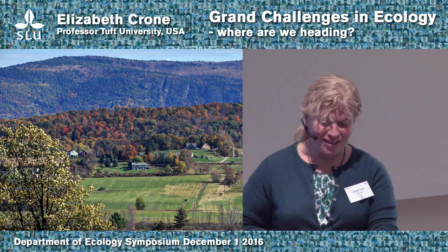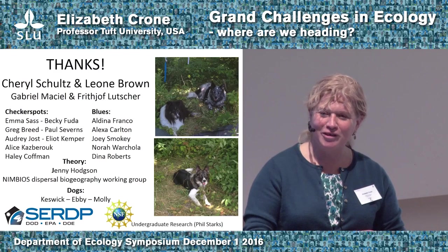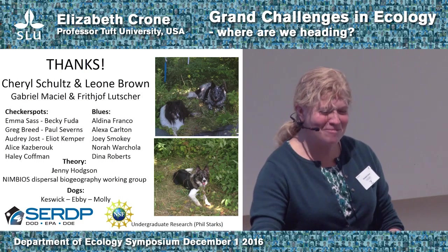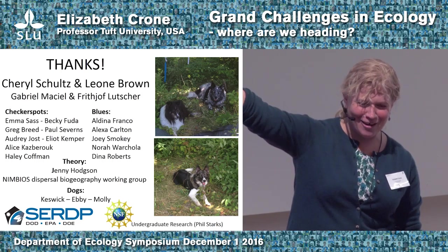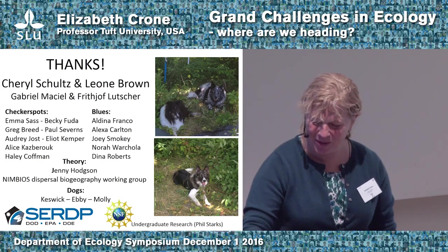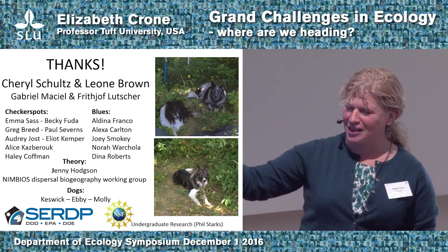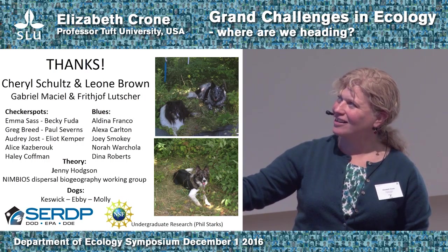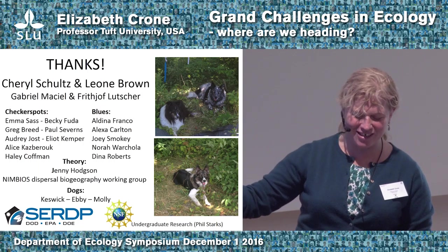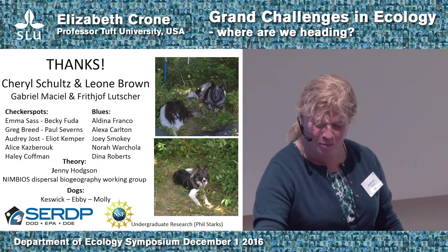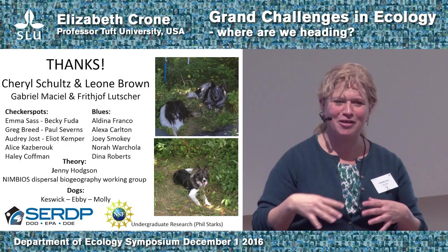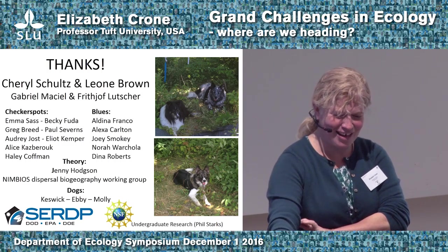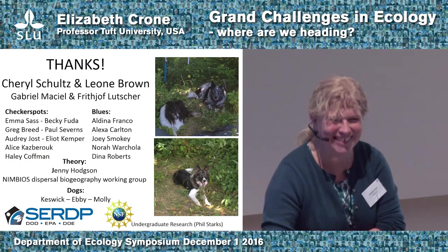As we step back: is it useful to have these very abstract general theories that are clearly not perfect but are a framework for everyone to interpret their data? It gives us a common basis for conversation, and potentially in 20 years we'll have hundreds of comparative movement studies. People are tracking all kinds of animals with different technology, but interpreting them in idiosyncratic ways. On the other hand, it can constrain us to taking these models too literally. I do think that integrating the complexity of real landscapes with general ideas from theory will help us both improve theory and improve the way we apply conservation. Thank you all for listening. Thank you to Cheryl Schultz and Lee Brown for the data, and to Gabrielle Massiel and Fritjof Lutcher, the applied mathematicians who extended the results to be usable by ecologists.